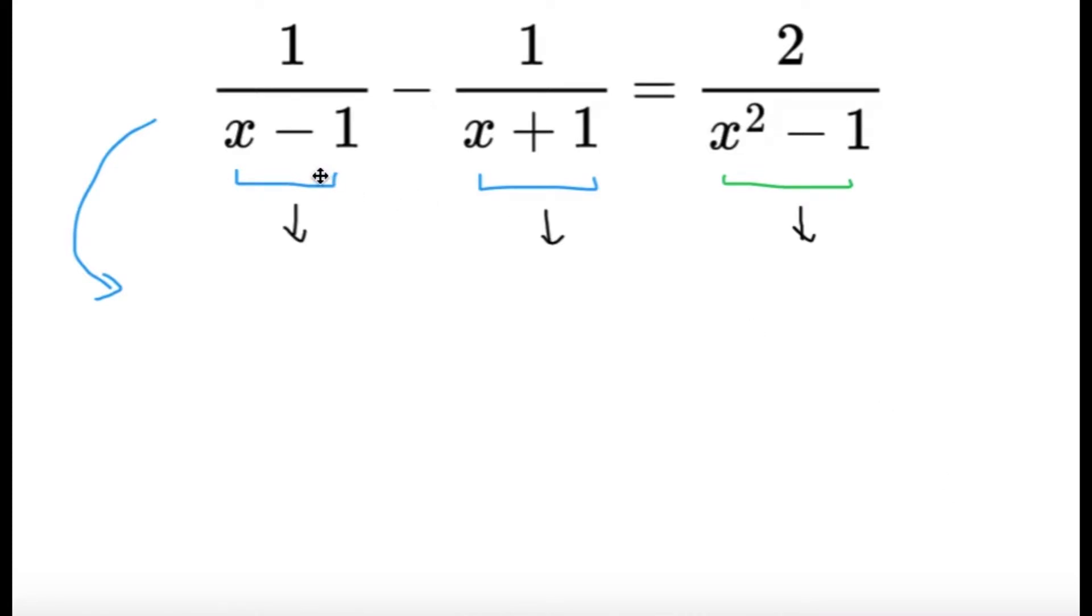I immediately noticed that x minus 1 times x plus 1 equals x squared minus 1. So, the LCM of the denominators is just x squared minus 1. Let's start by multiplying both sides by x squared minus 1.